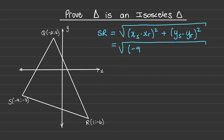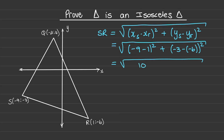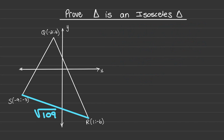I have (−9 − 1)² + (−3 − (−6))², and when I simplify, it is 10² + 3², which is equal to the square root of 109. So the length of line SR is √109.